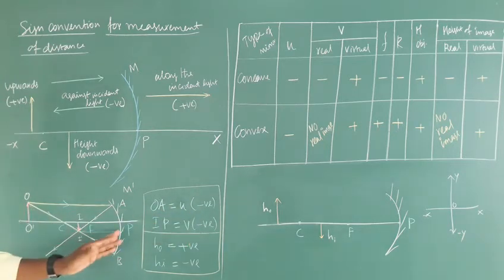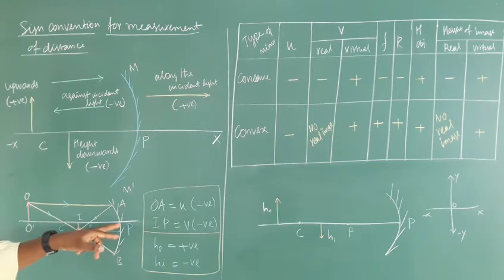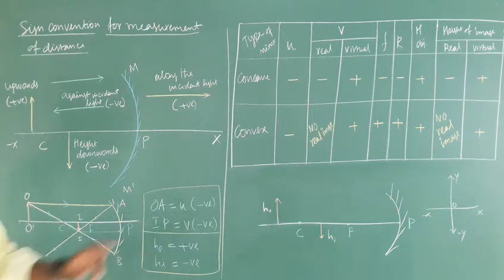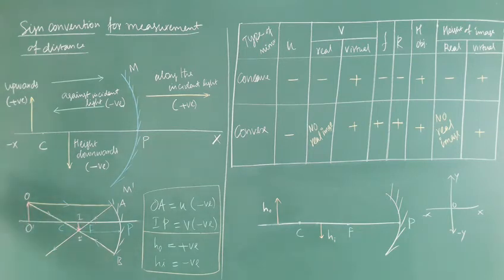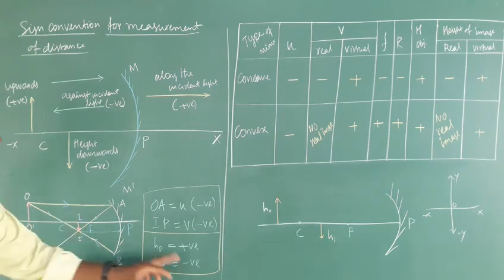The image distance: the image is formed on the left-hand side of the mirror — here AI is the image, and IP is the image distance v. Since it is on the left-hand side, v is negative. The height of the object is positive because the object is placed above the principal axis. The height of the image is negative because the image is formed below the principal axis.